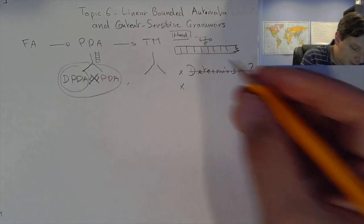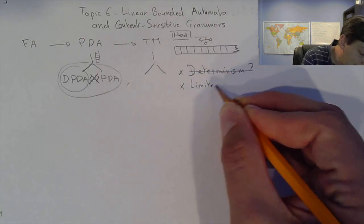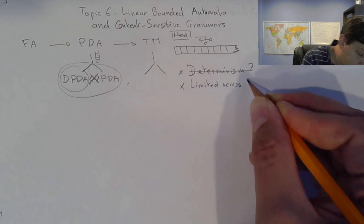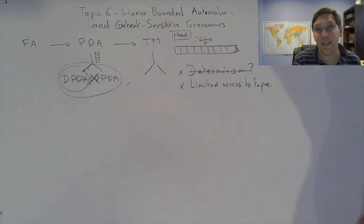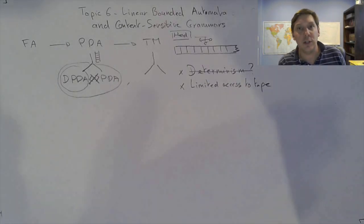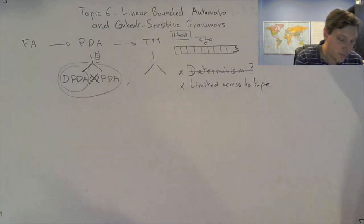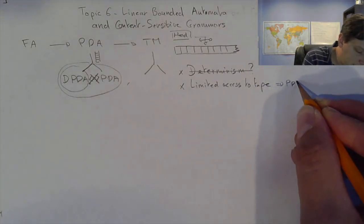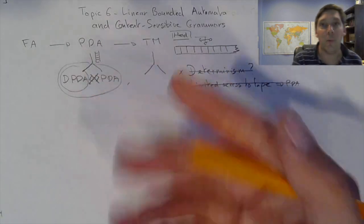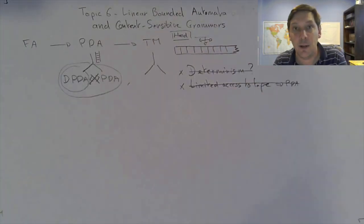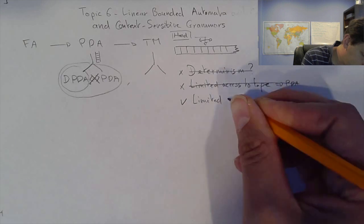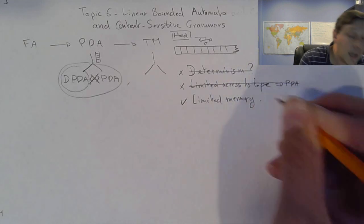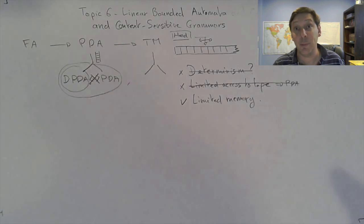We could look at limited access to memory, but that would amount basically to returning to the state of a stack — a PDA — which we already know. What we could do, however, is limit memory. And that's what a linear bounded automaton is: it's just a Turing machine with limited memory.